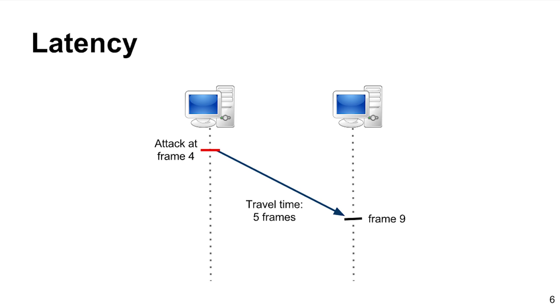Because of latency, actions coming from the network can refer to a past moment. It may be necessary to go back in time, apply the action, and redo the state until present.